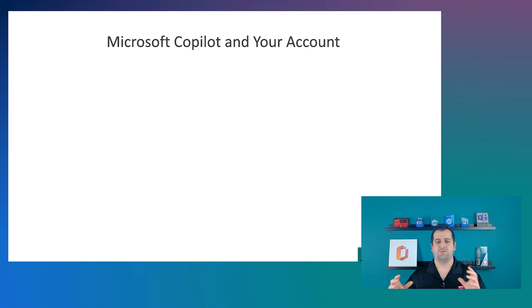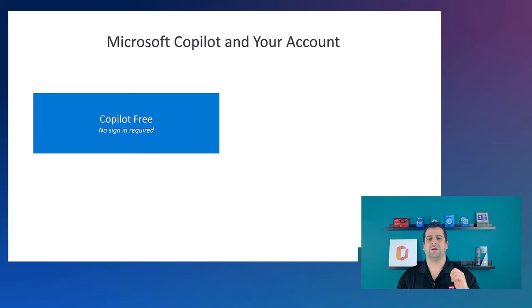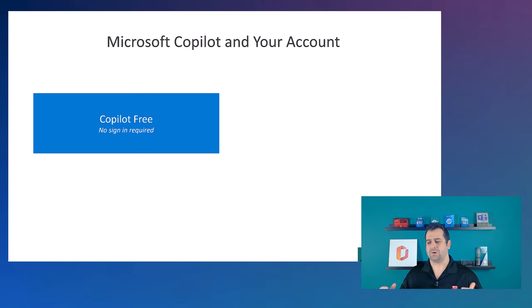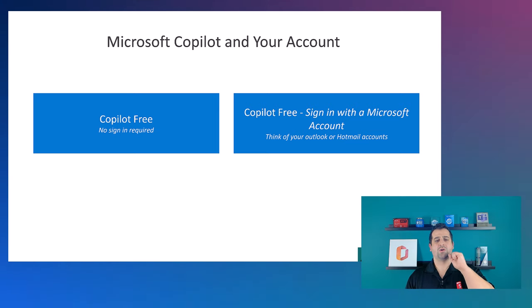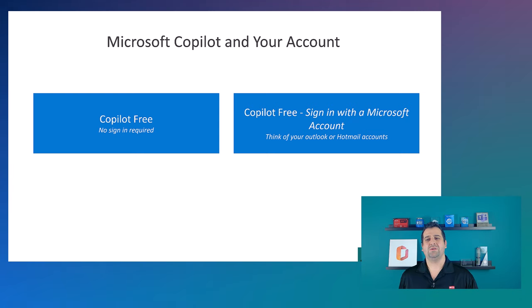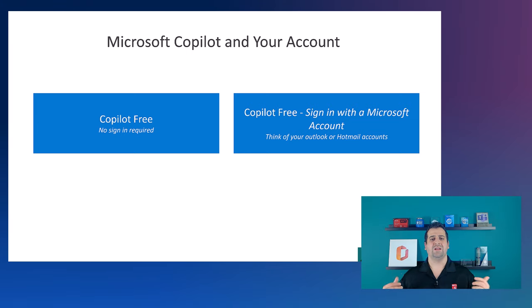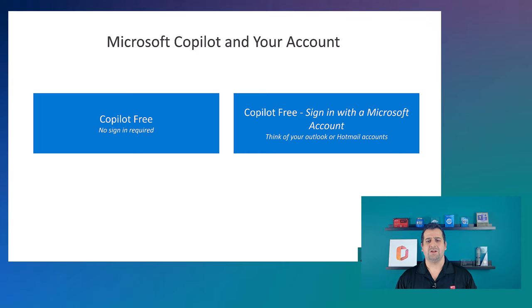Each one of them and even two different subscriptions that will give you different capabilities. The first one is Copilot free, which requires no sign in at all. You can open up an incognito or an in-private tab today, go to copilot.microsoft.com and start using Copilot — you do not need to sign in. The other option is Copilot still free, but signed in with your Microsoft account — think your Outlook account or the Microsoft account you used to connect on Xbox. Sign in with any Microsoft account and you will unlock so many features.